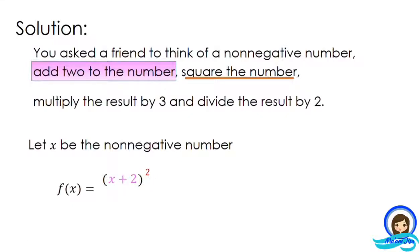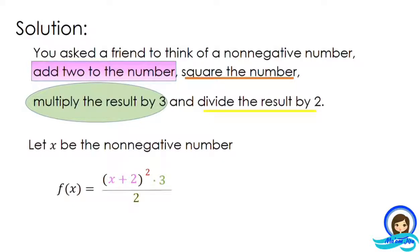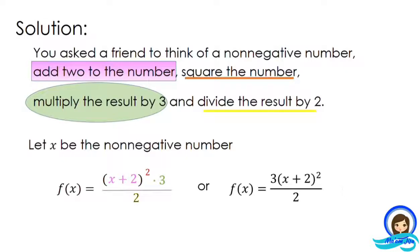Next, multiply the result by 3 — so that means times 3. Then divide the result by 2 — so we divide by 2. Now we already have our function: f(x) = (x + 2)² × 3 / 2, or we can rewrite it as f(x) = 3(x + 2)² / 2.